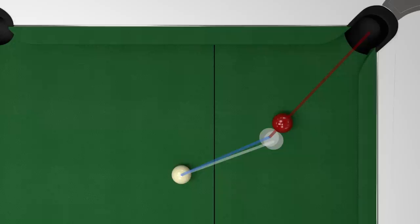There are lots of factors that come into play as well, like how much side we use, how hard we hit the shot, the speed of the cloth, the quality of the balls, the distance between the balls, and the distance to the pocket. All of these things will have a bearing, making it very hard to judge.